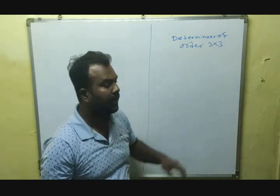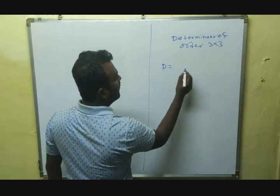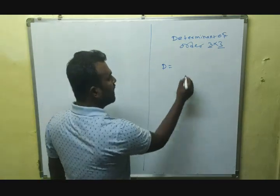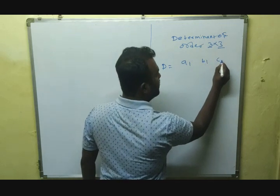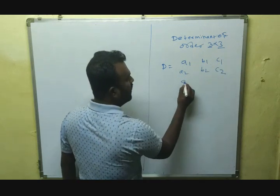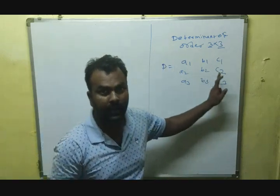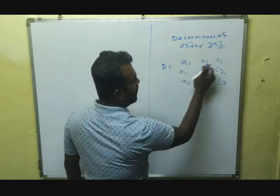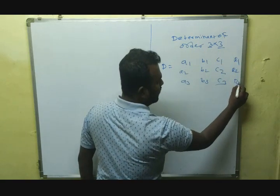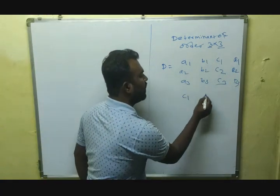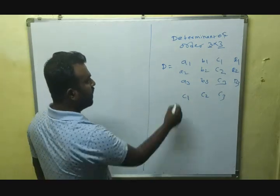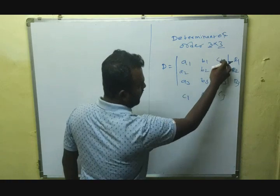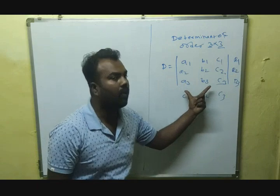Now we will start the determinant of order 3 by 3. A 3 by 3 determinant is an arrangement of 3 by 3, that is 9 numbers. For example, the elements are: a1, b1, c1 in the first row; a2, b2, c2 in the second row; a3, b3, c3 in the third row. There are 3 rows and 3 columns, so this is a determinant of order 3 by 3.